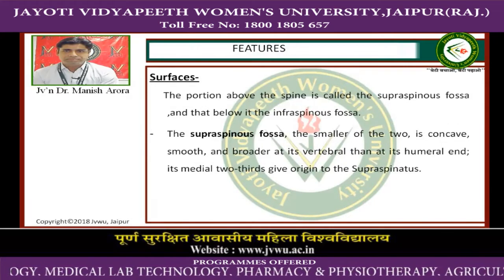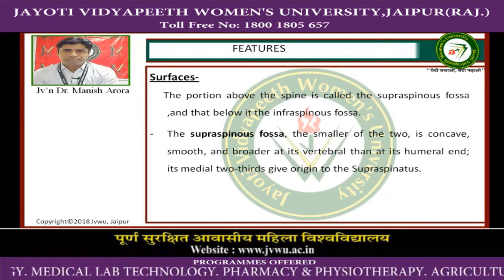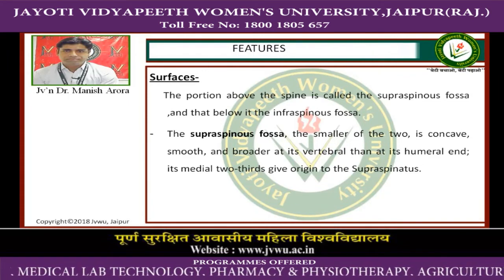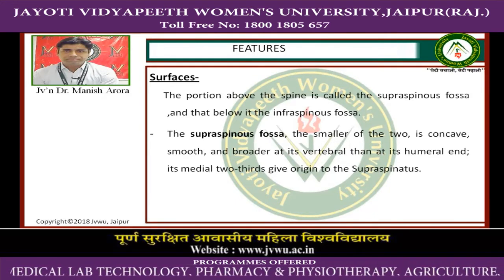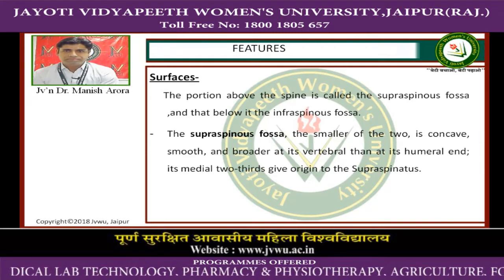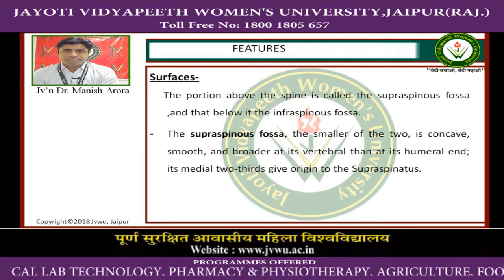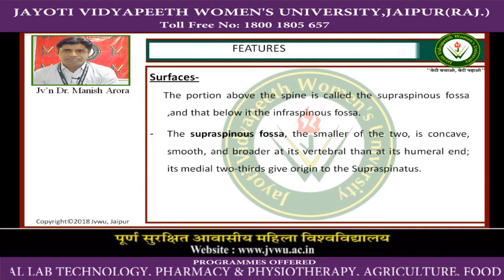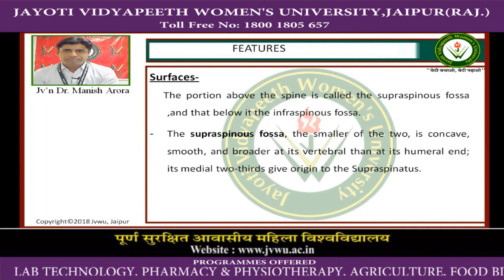The portion above the spine is called the supraspinous fossa and below it the infraspinous fossa. The supraspinous fossa, the smaller of the two, is concave, smooth and broader at its vertebral than its humeral end. Its medial two-thirds give origin to the supraspinatus muscle.